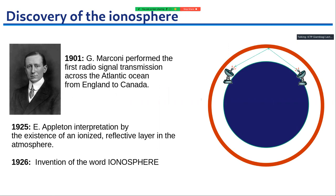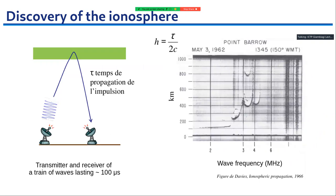Some history about the ionosphere: it was discovered in 1901 by Marconi, an Italian, who was performing the first radio signal transmission across the Atlantic Ocean. He successfully performed this experiment, and the ionosphere was kind of discovered accidentally. Many years later, the success of his experiment was interpreted by the presence of a conductive layer in the atmosphere, and in 1926 the word 'ionosphere' was invented to characterize this layer.